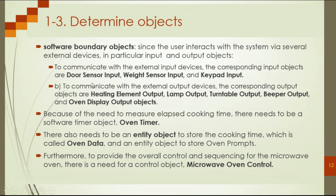The second step is to determine the output devices. In this system, the output devices are the heating element output, the lamp output, and the turntable output. We also create an object for each output device.